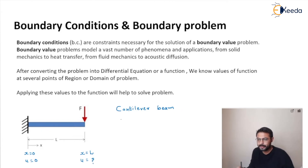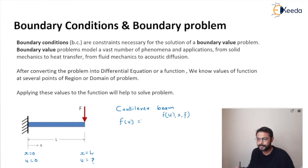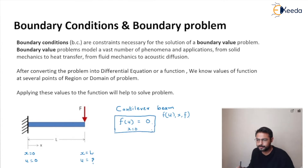In the cantilever beam, the displacement we want to find out is a function of x and the force F. If we apply the boundary condition at x equal to 0, the value of displacement is 0. This known value over some domain or at a particular region of the function is known as a boundary condition, and it helps us to solve the engineering problem or the differential equation.